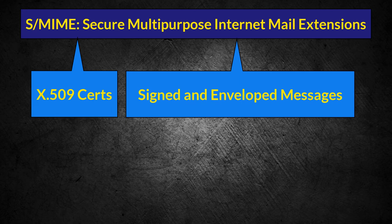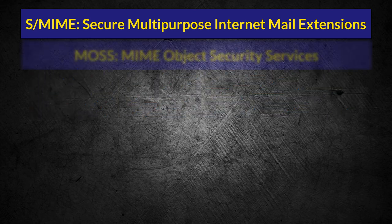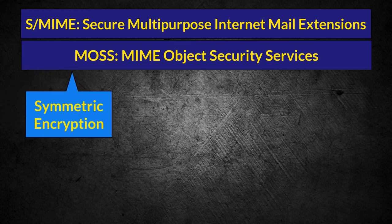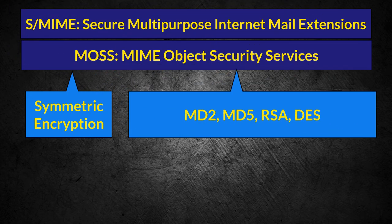Enveloped messages are encrypted and extend signed protection to confidentiality by protecting the message content with encryption. MIME Object Security Services, or MOSS, uses symmetric encryption and multi-part signed and multi-part encrypted frameworks for message signing and encrypting. MOSS is not widely used. MOSS uses MD2, MD5, RSA Public Key, and DES for authentication, confidentiality, integrity, and non-repudiation.